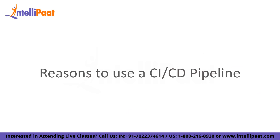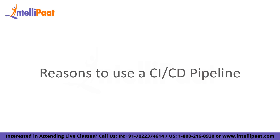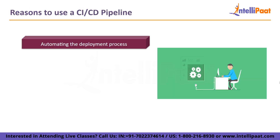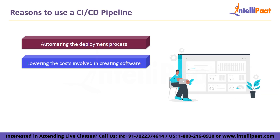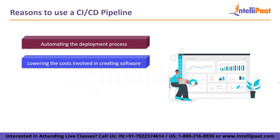Let us look at some reasons to use a CICD pipeline. A key advantage of the CICD pipeline is the automation of software releases from the first testing to the final deployment. Additional advantages include automating the deployment process — the length of the software delivery process is shortened by more effective use of automated testing in the development phase. Also, lowering the cost involved in creating traditional software: automation speeds up development, testing and production, which reduces cost because less time is spent on development.